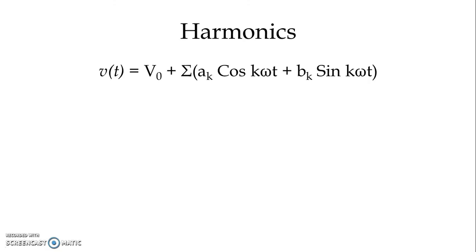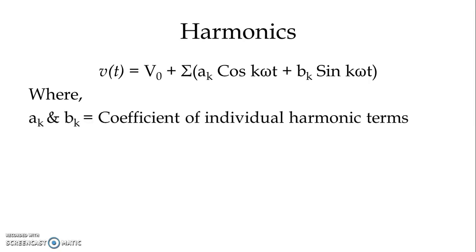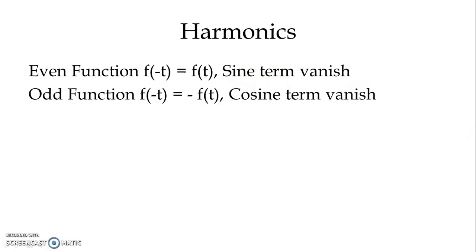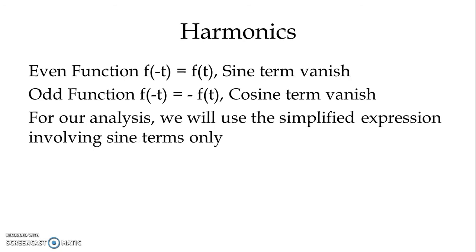To simplify our Fourier analysis, we have the expression: v(t) = V₀ + summation of [aₖ cos(kωt) + bₖ sin(kωt)], where k runs from one to infinity, and aₖ and bₖ are the coefficients of individual harmonic terms. For an even function where f(−t) = f(t), the sine terms vanish. For an odd function where f(−t) = −f(t), the cosine terms vanish. For our normal analysis we will use the simplified expression involving sine terms only.